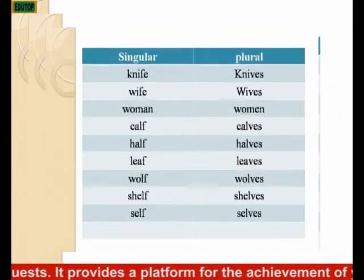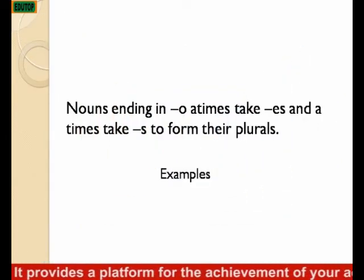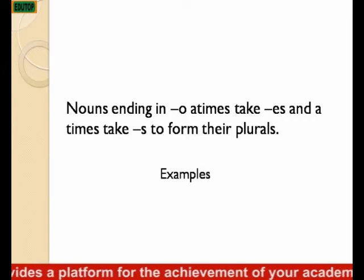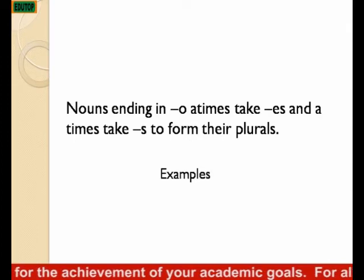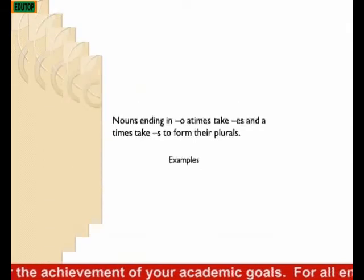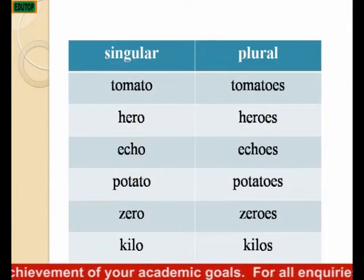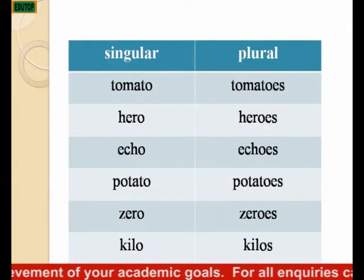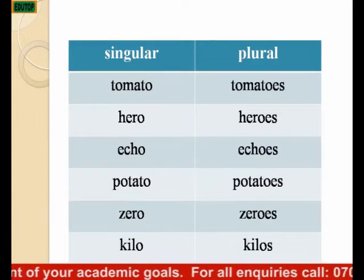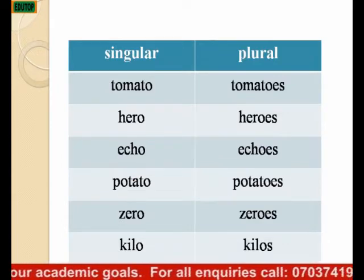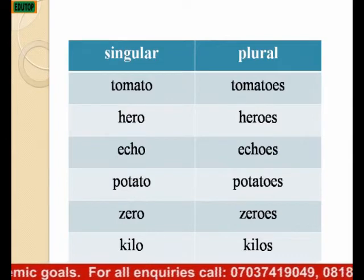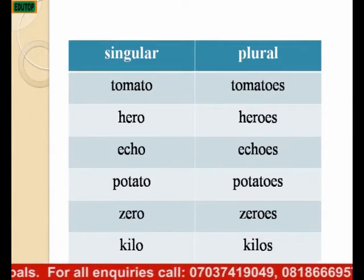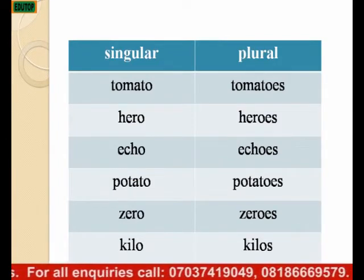Nouns ending in O at times take ES and at times take S to form their plural. Examples: tomato becomes tomatoes, hero becomes heroes, echo becomes echoes, potato becomes potatoes, zero becomes zeroes. Others like kilo become kilos, radio becomes radios, piano becomes pianos.